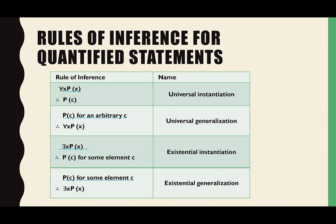Universal instantiation — this is a rule of inference using quantifiers. We know the term 'instantiation' from Java: you have a class and you make an instance, called an object. This is the same idea. If for all x in the domain P(x) is true, then we know that P(c) is also true for some arbitrary value c, if c is in that domain.